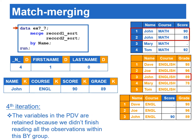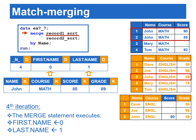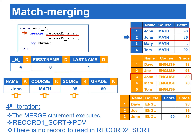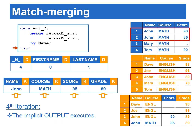At the beginning of the fourth iteration, the variables in the PDV are retained because we didn't finish reading all the observations within this by group. When the merge statement executes, first.name is set to zero and last.name is set to one, since this is the last observation in this by group. SAS copies the second observation where name equals John from record one sort to the PDV. There is no record to read in record two sort, but the value of the grade variable from record two sort from the previous iteration is retained in the PDV. The implicit output copies the contents from the PDV to the output data.